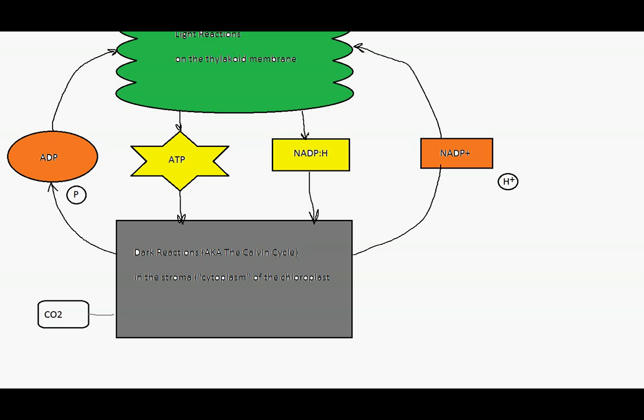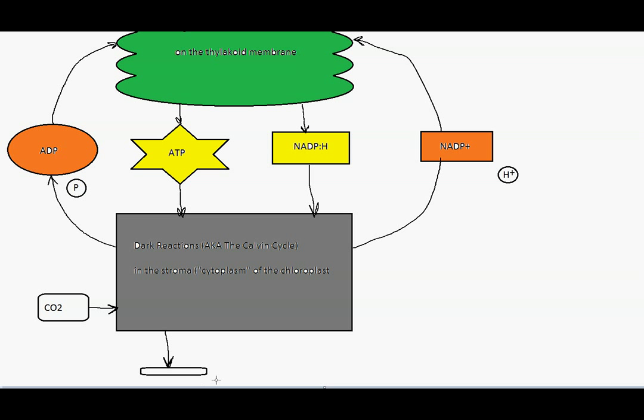To finish this off, dark reactions. We'll take a look at exactly where these things come into play. Taking in carbon dioxide. Dark reactions are making glucose, which is of course C6H12O6. Sorry, I'm not subscripting, but that's not as easy in Paint here, but you get the idea. Glucose.